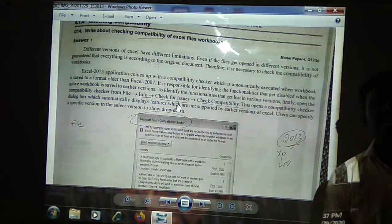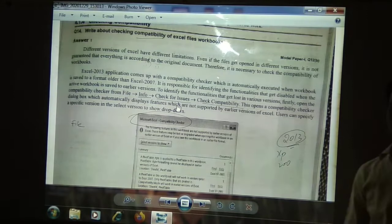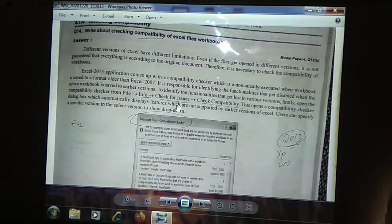In info, you will be having check for issues. In that, you will be having checking compatibility. There, you will be getting the information what will be eliminated, what will be seen in your updated or older version. This is how you will have a compatibility feature in Excel.